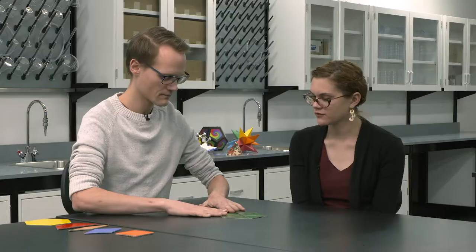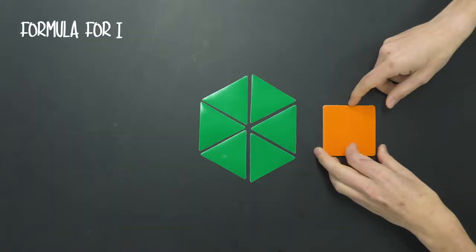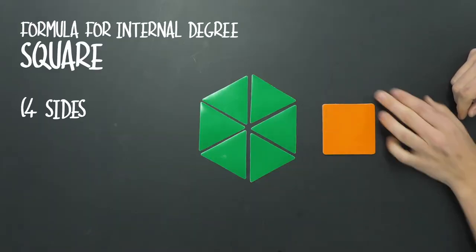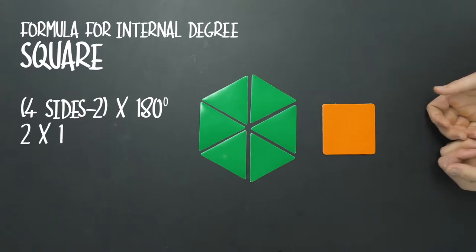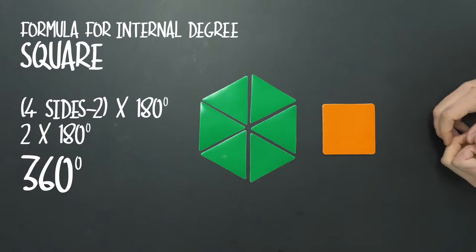Okay. And then can we use that for other types of shapes, let's say a square? We can. So if we have a square here, if we pull one out, we have four sides. And so if we subtract two, we get two. We multiply by 180 degrees and we get 360 degrees.